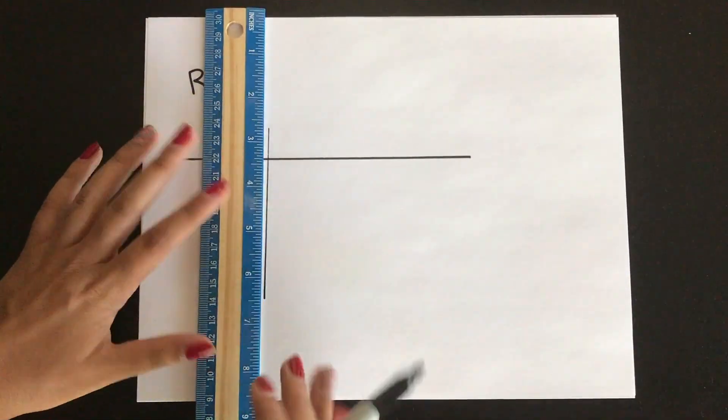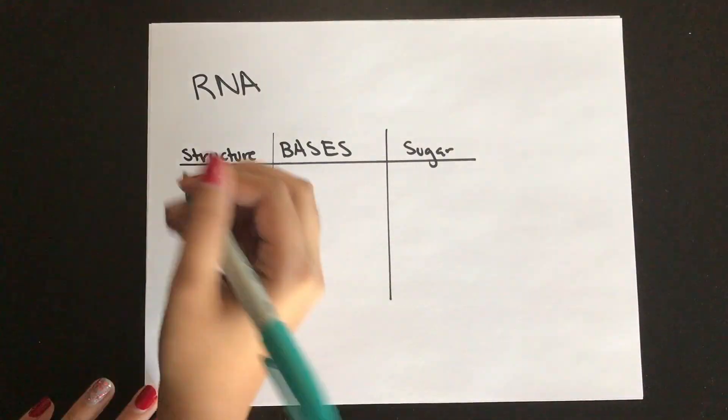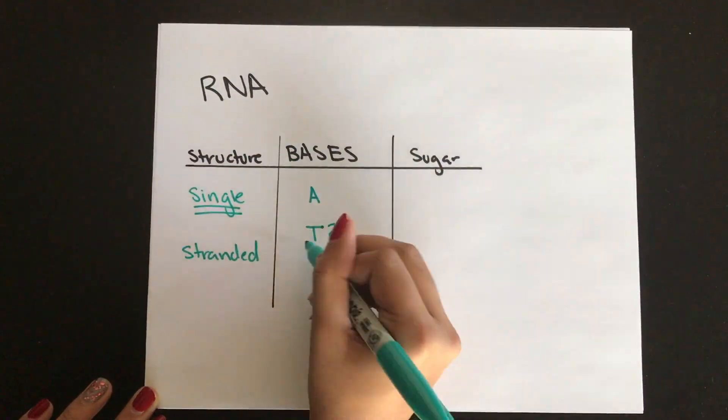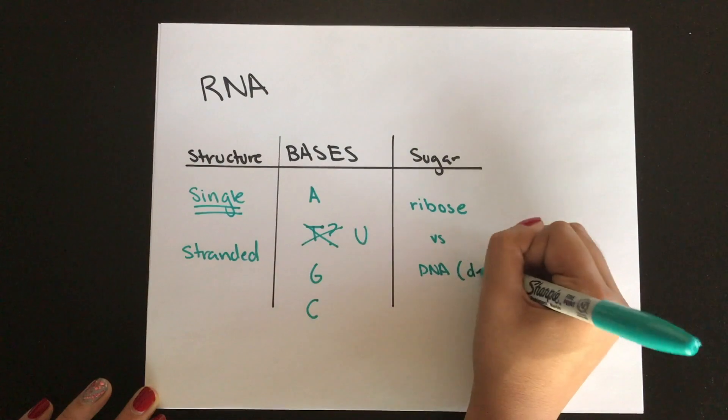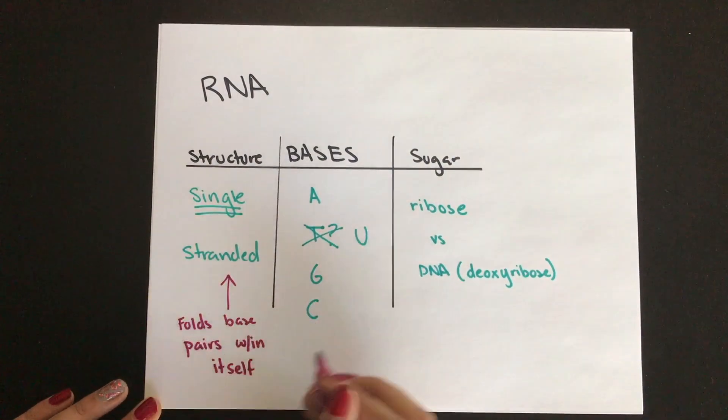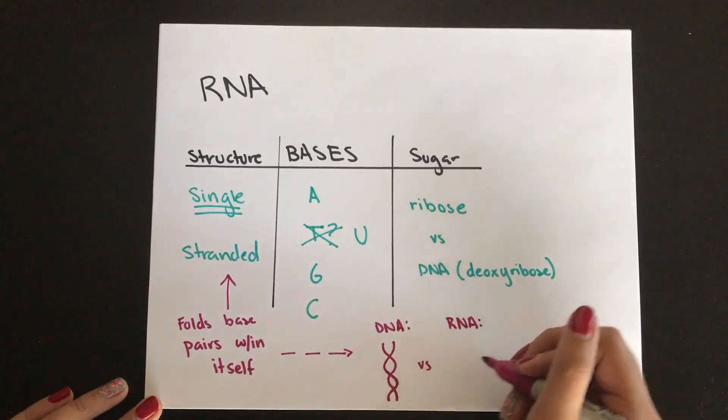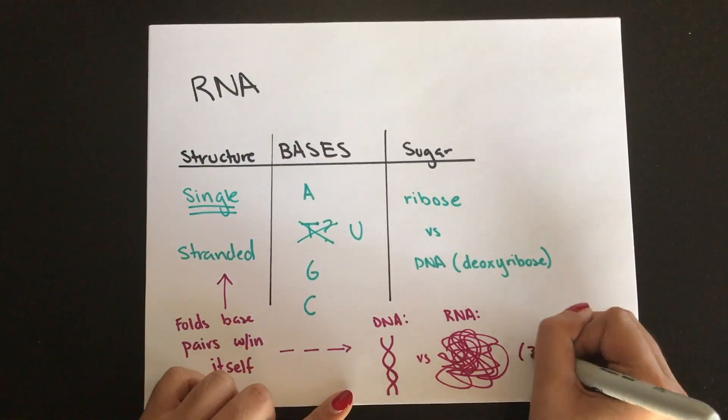The last molecule to discuss in this video is RNA. RNA is single-stranded and replaces the thymine with uracil. And like we said earlier, the sugar is made up of ribose instead of deoxyribose. RNA can also fold with the base pairs within itself, and that's how it forms the 3D structures, unlike DNA, which has the double helix to form the 3D structures with it.